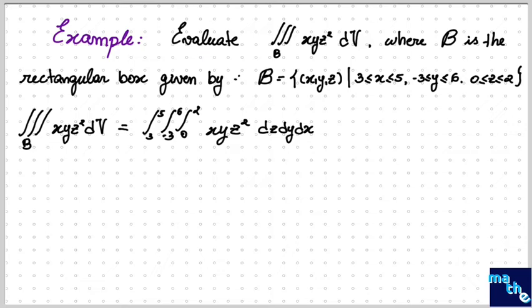We already know that we should integrate first in respect to Z. So, we get the double integral from 3 until 5 for X, and -3 until 6 for Y, of XY times the integral of Z² evaluated for 2 and 0, dy dx.